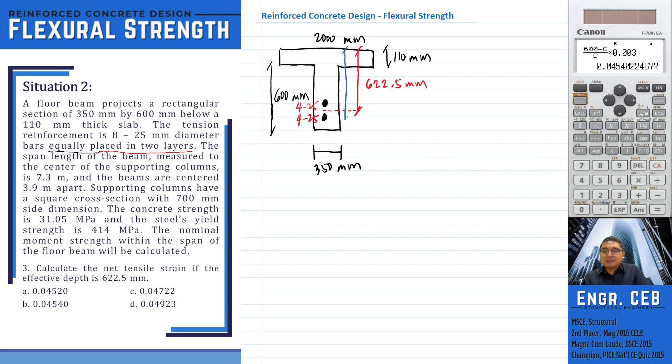So meaning we always get the net tensile strain at the depth D sub T. When we say D sub T, that is from the extreme fiber in compression up to the center of the rebar at the farthest layer. So if we have two layers, D sub T is up to the farthest layer.